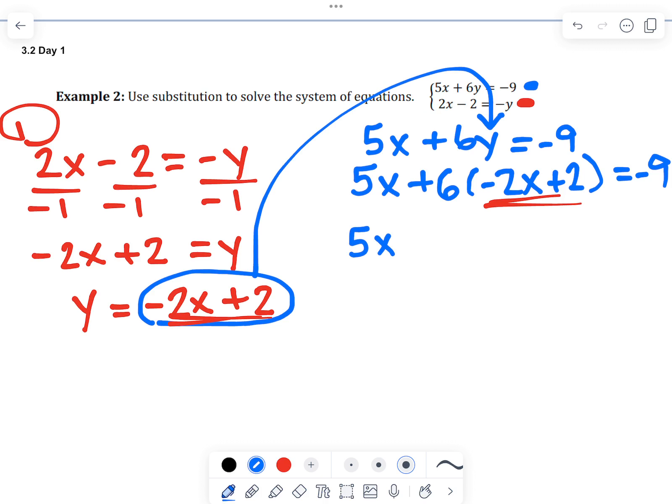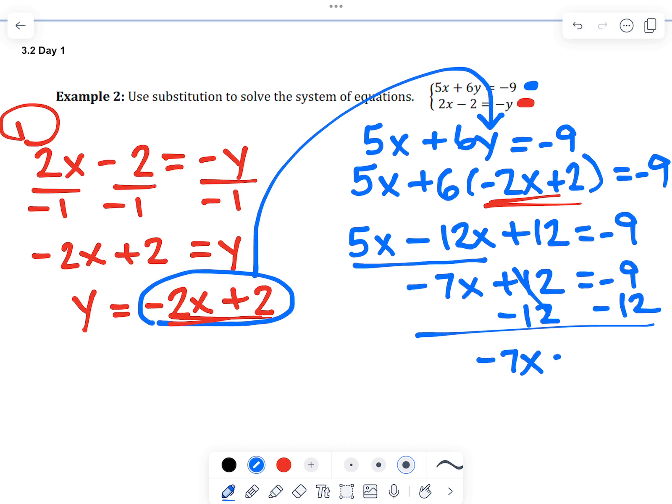So we distribute the 6 into the parenthesis. We combine like terms. So you get negative 7x. We subtract 12 from both sides. Simplify. And then we divide both sides by negative 7. So x equals 3. We just completed step 2.